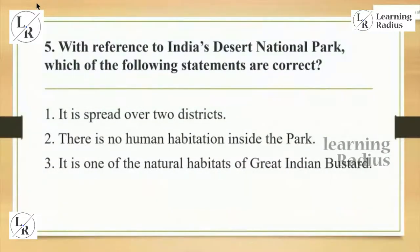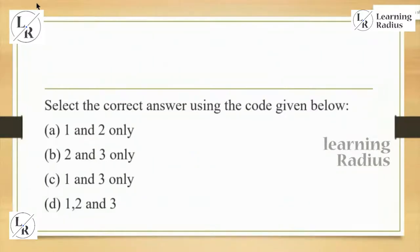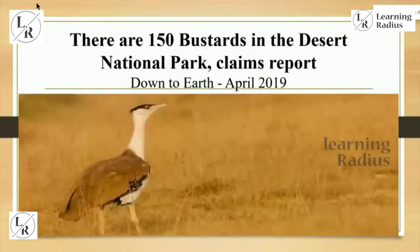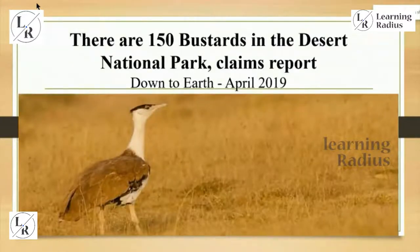The fifth question is related to India's desert national park. This was frequently in the newspaper, most often in connection with the Great Indian Bustard. With reference to India's desert national park, which of the following statements are correct? Options include: it is spread over two districts, there is no human habitation inside the park, it is one of the natural habitats of the Great Indian Bustard. The answer is options 1 and 3 — 'there is no human habitation inside the park' is wrong, but it is spread over two districts and is one of the natural habitats of the Great Indian Bustard.